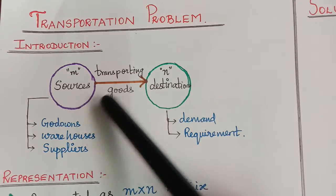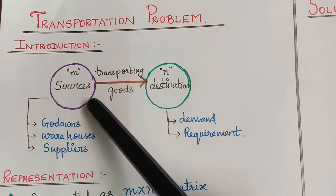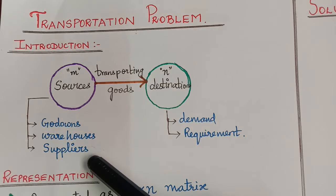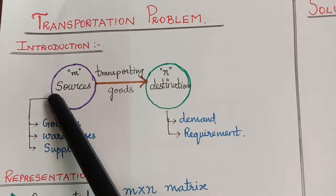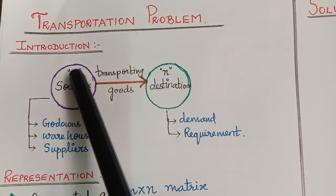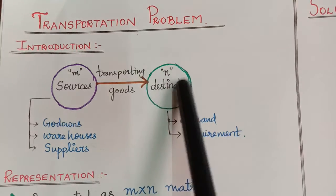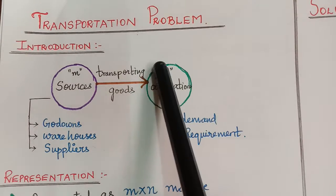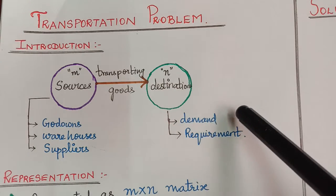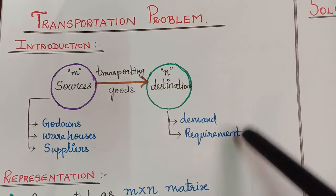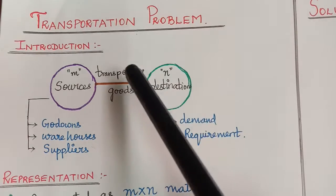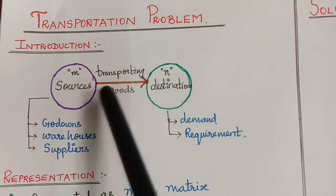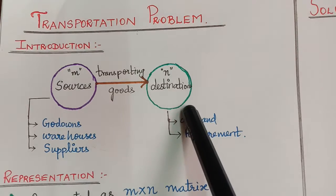What are these M sources? M sources are also known as godowns, warehouses, or suppliers. From these sources, we have to transport the goods to the place where it has to reach, and that is known as destination. It is also known as demand requirement. So the idea of the transportation problem is transporting goods from M sources to N destinations.